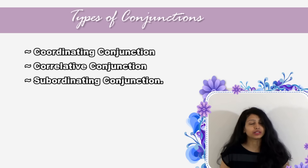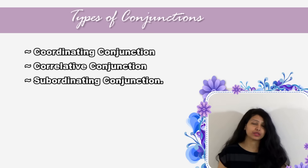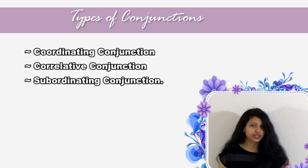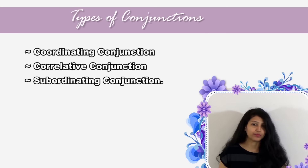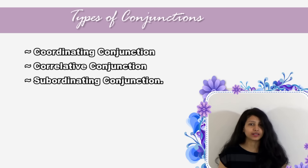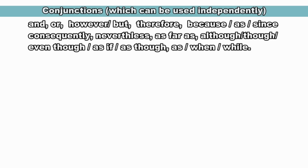Now let's look at types of conjunctions. There are different kinds: coordinating conjunction, correlative conjunction, and subordinating conjunction. But as far as competitive exams are concerned, you don't need to understand the different kinds of conjunctions — you only need to understand the uses of different conjunctions. In my video, I will discuss all the important conjunctions from an exam point of view.